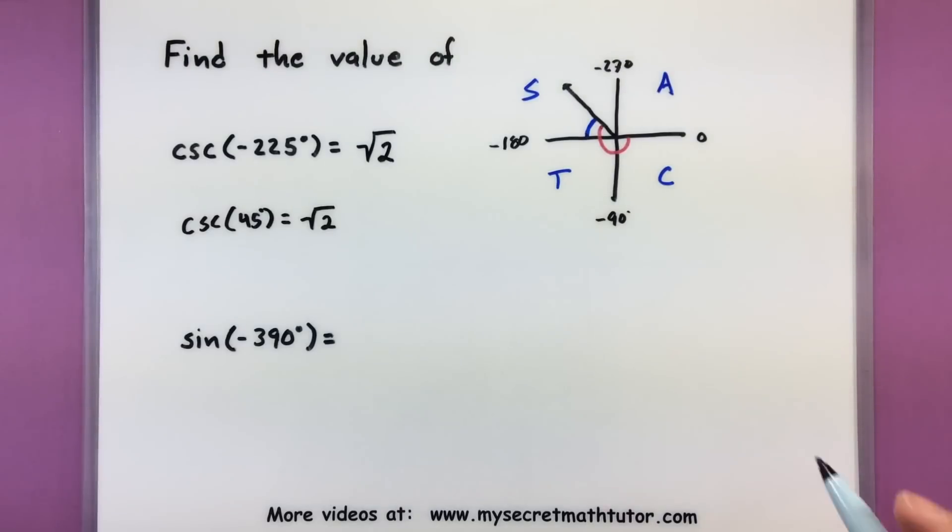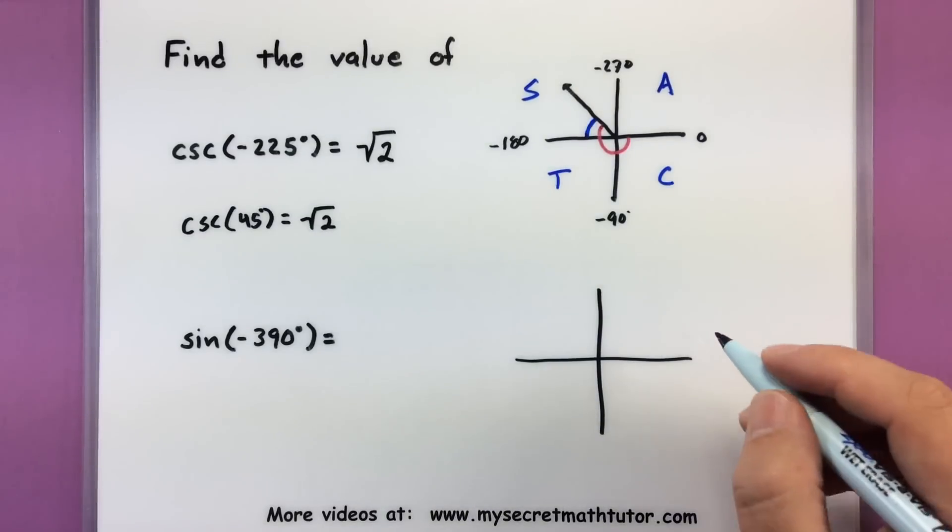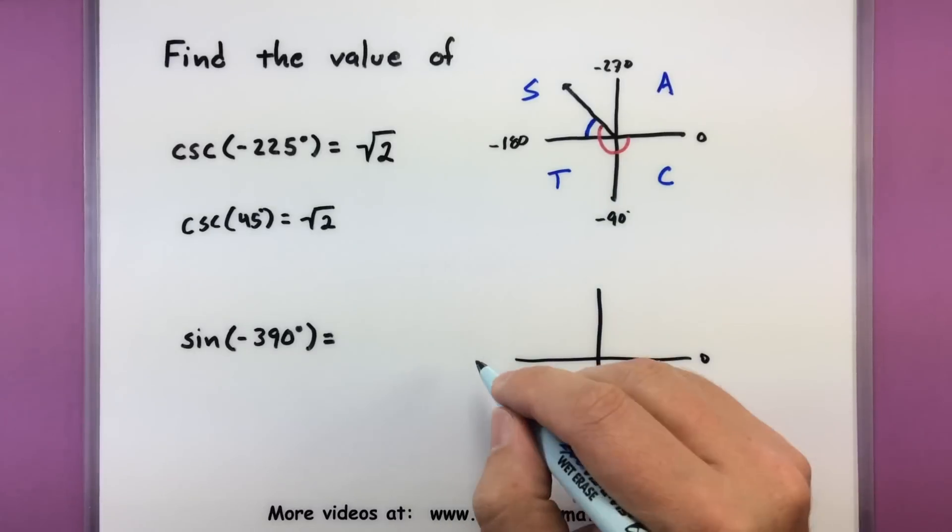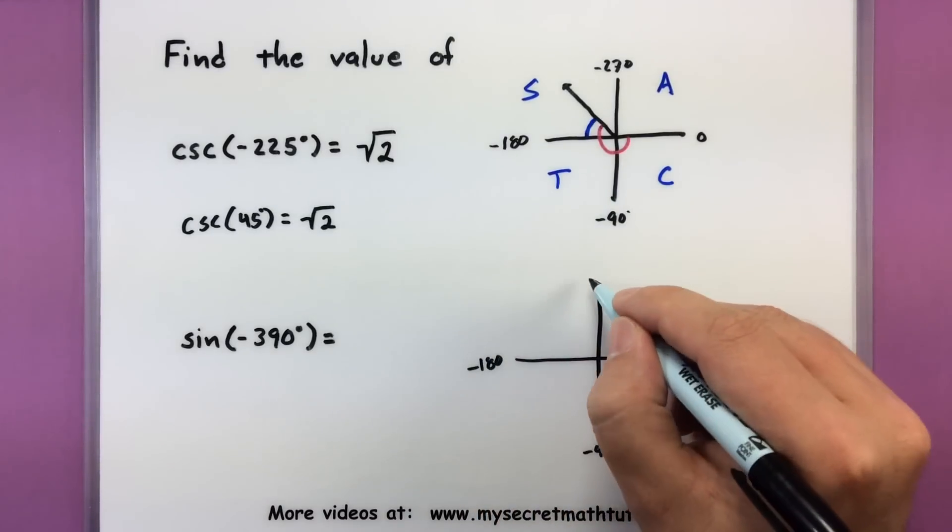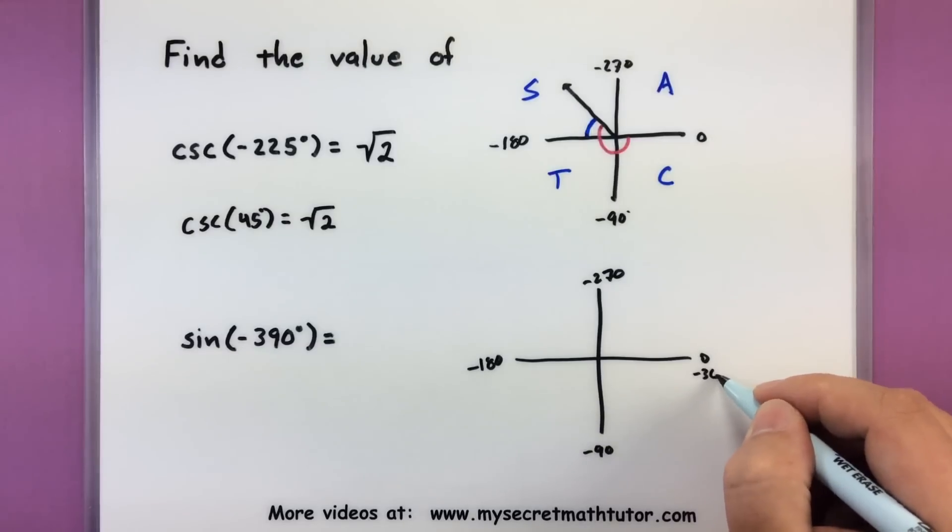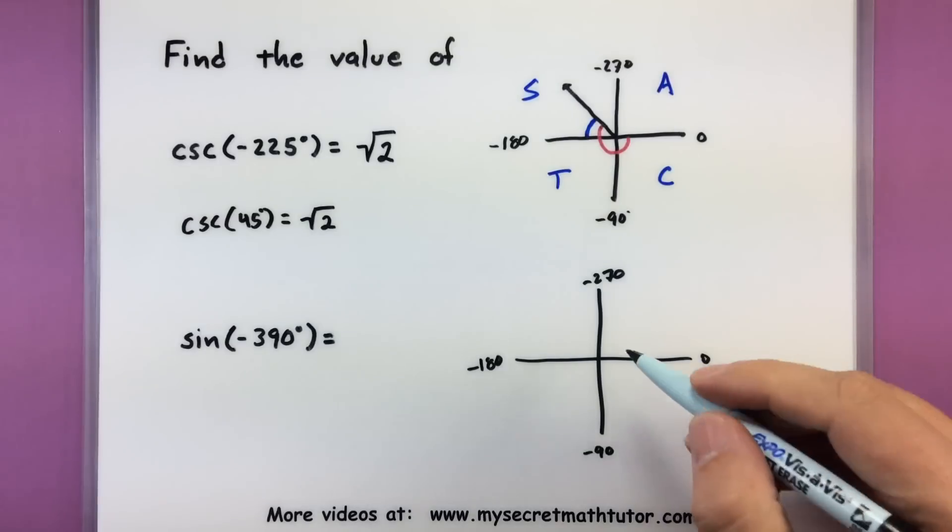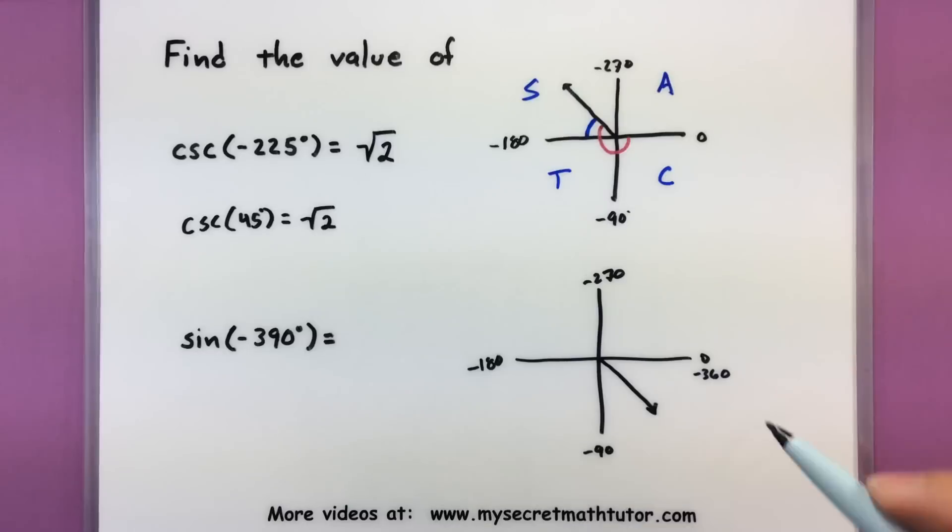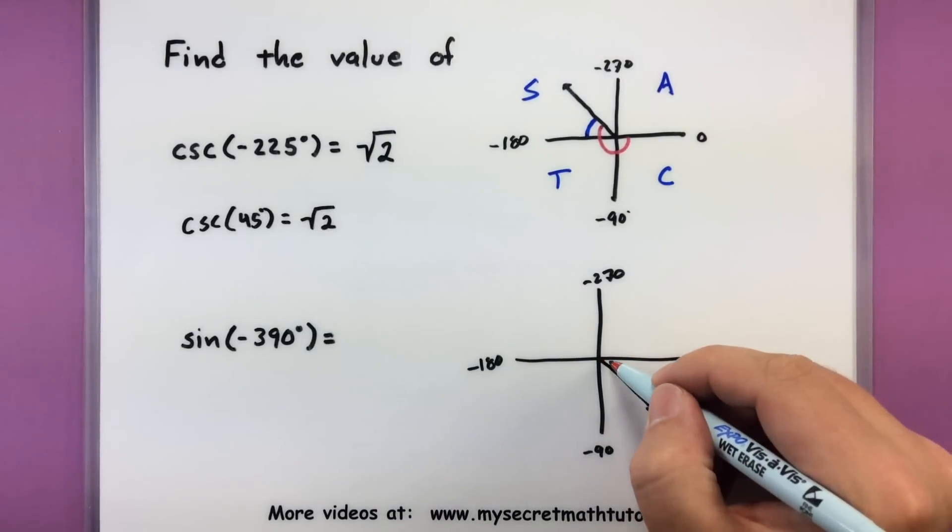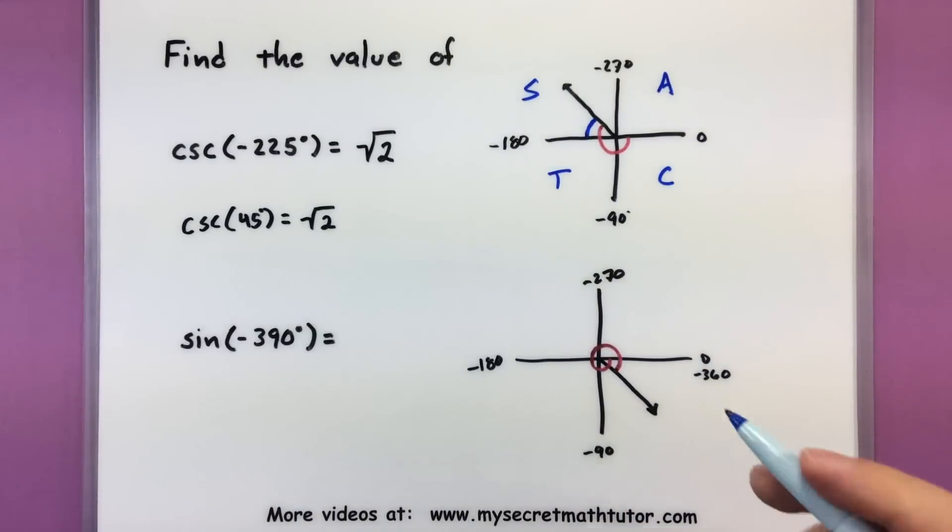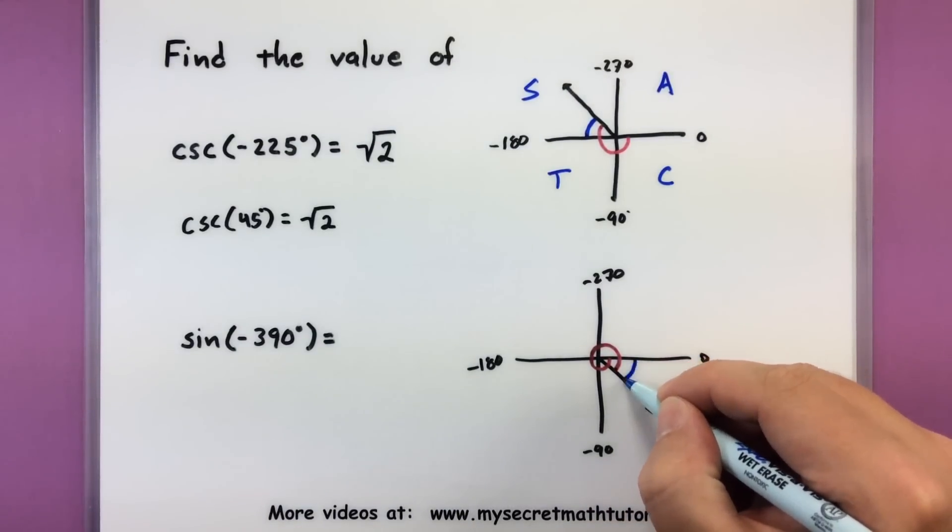One last one, just make sure we are good. This one is negative 390 degrees. So 0, negative 90, negative 180, negative 270, negative 360, still not there. Actually, I need to go just a little bit beyond negative 360 and then we'll have our angle. So it looks like we're over here in quadrant number four. So visually, what did we do? We went all the way around and then just a little bit farther. This would make our reference angle right there.